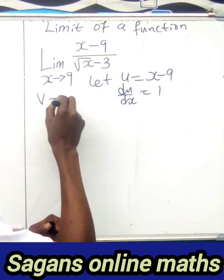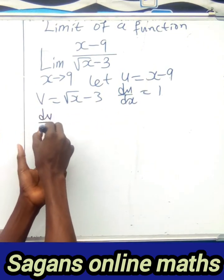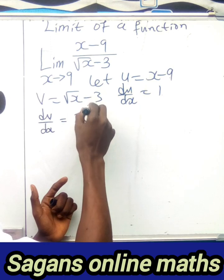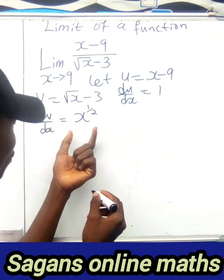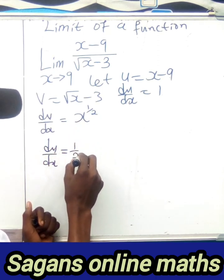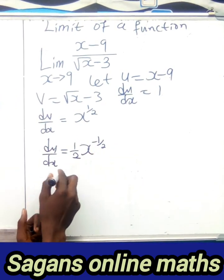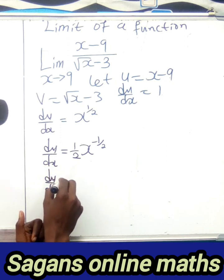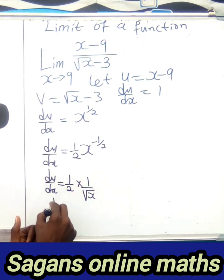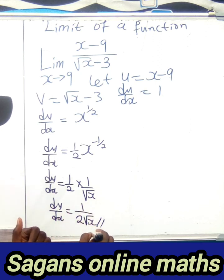Now let v equal the denominator: v equals √x minus 3, which is x to the power of 1/2 minus 3. Differentiating: the derivative of 3 is 0, so dv/dx equals (1/2)x to the power of negative 1/2. Simplifying, dv/dx equals 1 over (2√x).